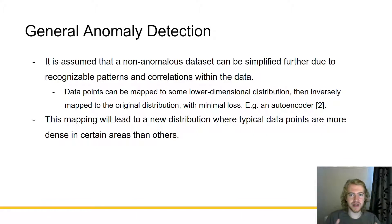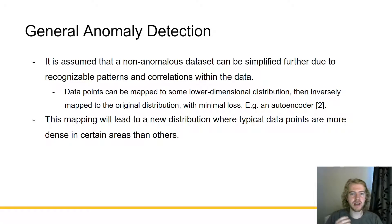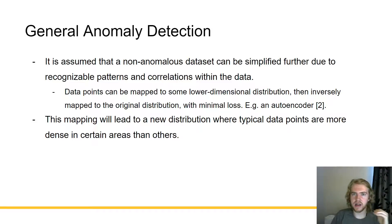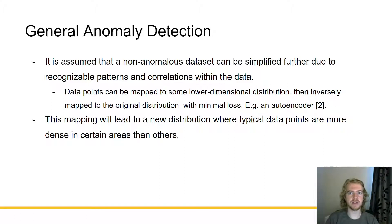It is assumed that a non-anomalous dataset can be simplified further due to recognizable patterns and correlations within the data. So data points can be mapped to some lower dimensional distribution, then inversely mapped to the original distribution with minimal loss. For example, you can use an autoencoder. An example of this kind of distribution reduction would be housing prices, where you get to see their price, their number of bedrooms, number of bathrooms, and often times those things might correlate with each other. And so they can be reduced into simpler distributions which will then better describe the data in a much lower dimensionality way.